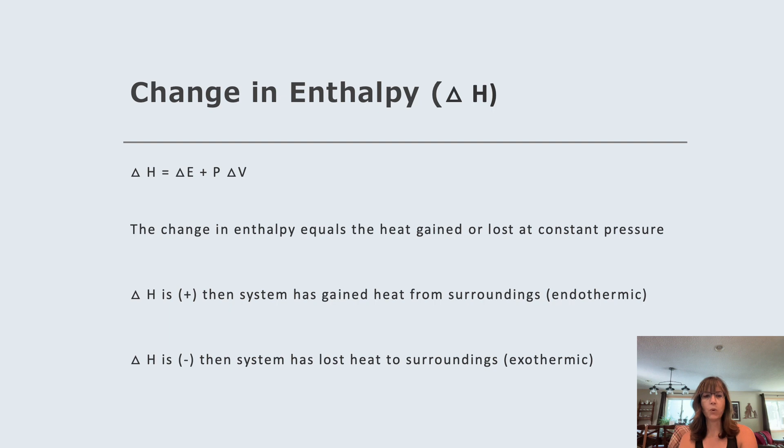Here's that equation one more time. Now we're not necessarily going to use this equation, but it's just that the change in enthalpy equals the heat gained or lost at a constant pressure. What you need to take away from this is when delta H is a positive value, that means endothermic. When delta H is a negative value, that means exothermic. You have to know that. You need to know that delta H negative is exothermic and that it's a product. Heat would be a product in the equation.